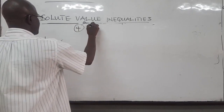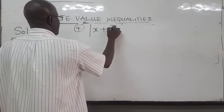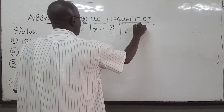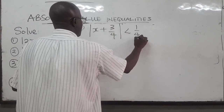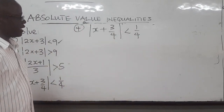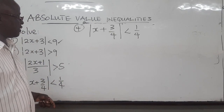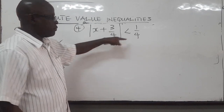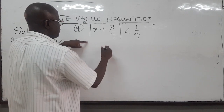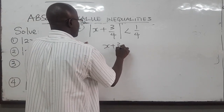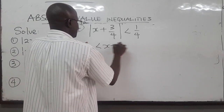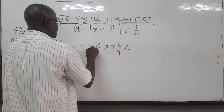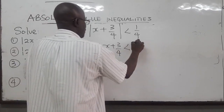For the last one, number 4, we have the absolute value of x plus 3 over 4, and this is less than 1 over 4. There isn't much to it — we can just apply the definition. Because it's less than, by definition this means x plus 3 over 4 lies in the interval negative 1 over 4 to 1 over 4.